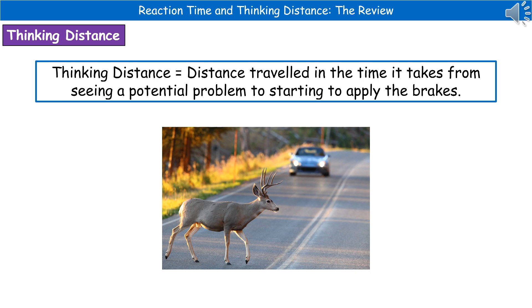The next term we need to know a definition for is thinking distance. It's the distance traveled in the time it takes from seeing a potential problem to starting to apply the brakes. In the picture shown, a car is going to see a deer in the road and will have that time where they're thinking about putting their foot on the brake — they're still traveling at that point. Make sure you include the phrase 'distance traveled' rather than just saying the time it takes, because it is a thinking distance.